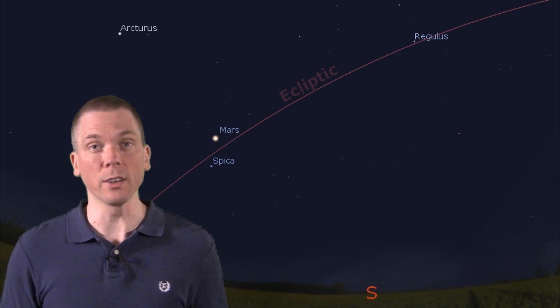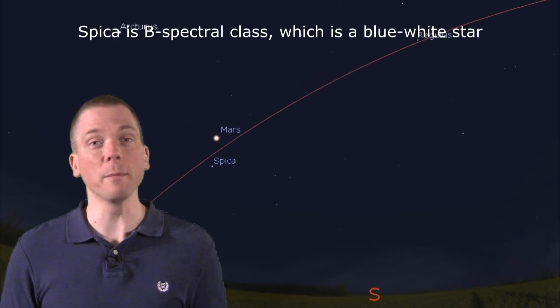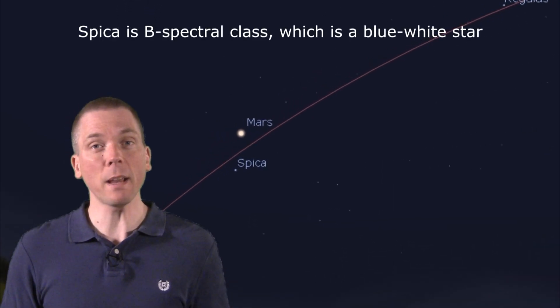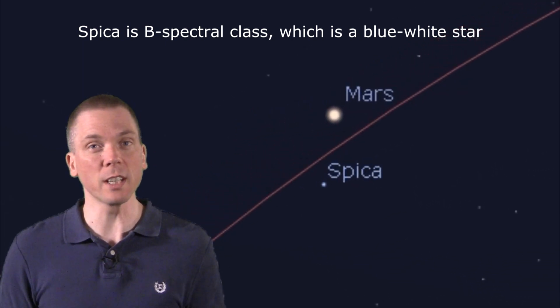This season, Mars is right near Spica, offering a lovely contrast of colors, subtle to be sure, but Mars is rather orange looking and Spica has a slight bluish cast to it. This star is rather interesting, too.